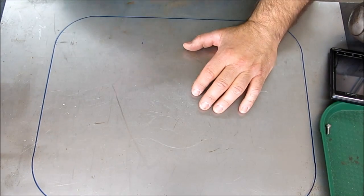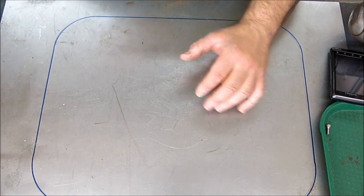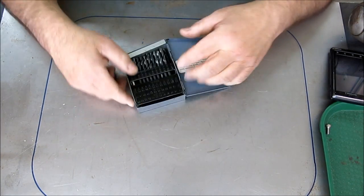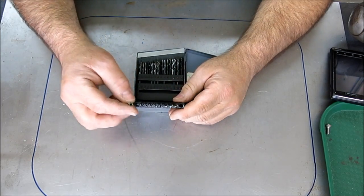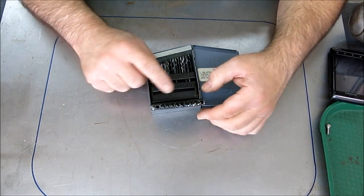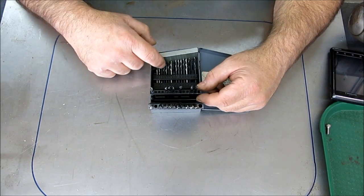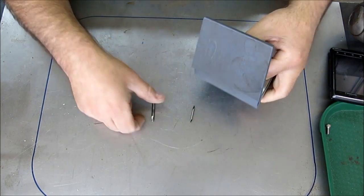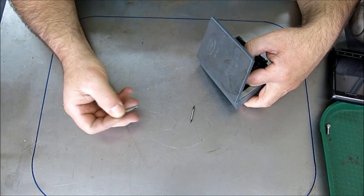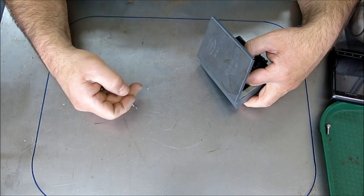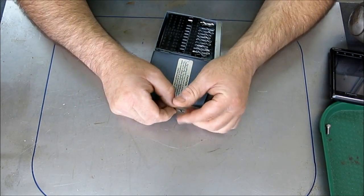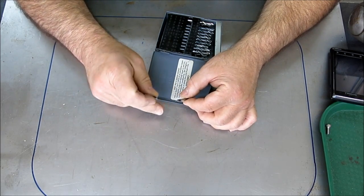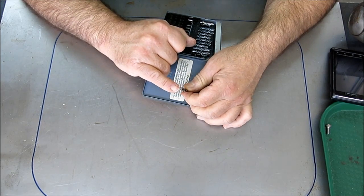So the reason I'm telling you the prices is I'm going to tell you what I paid for this whole lot when we get to the end. So the next one, there was a drill set. It's a screw machine length, wire sizes. So there's a little stubbies. There's a few missing, not too bad.